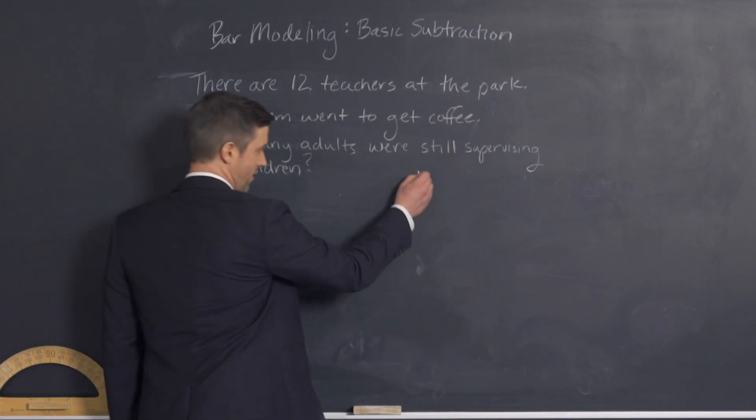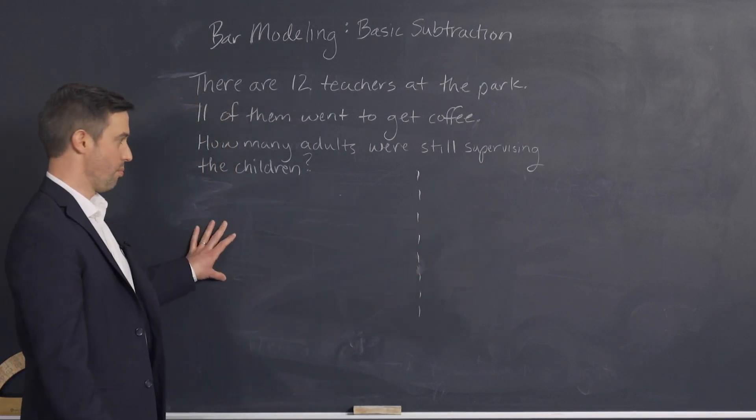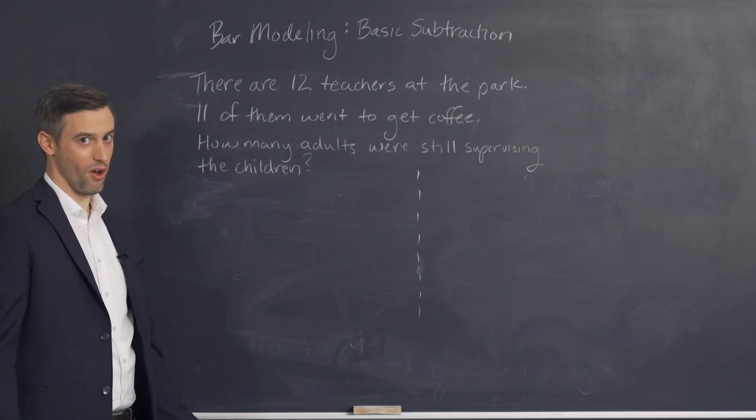And I should have drawn a line here just to give me some demarcation that I'm going to have my arithmetic over here and my bar model over here. So let's read it all the way through.